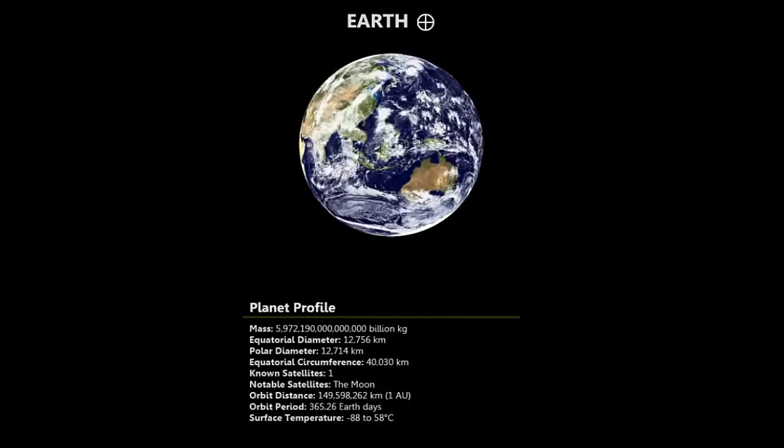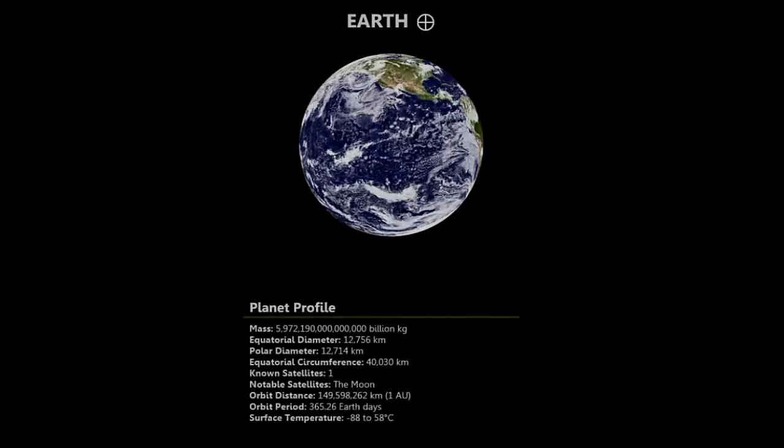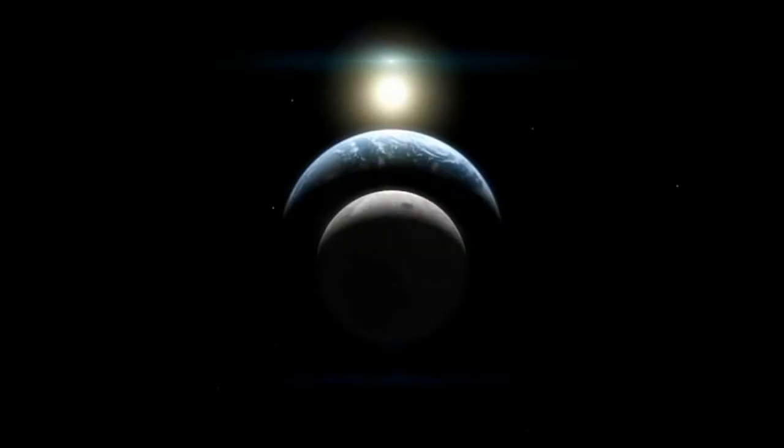Earth has many satellites including the natural moon as well as artificial lights placed in orbit for scientific research, communication and navigation purposes. Other planets have their own moon and artificial satellites too.